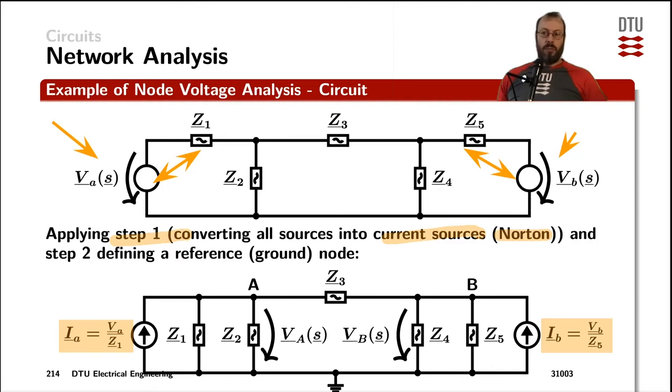So moving on to step two, we need to define a reference node that we typically call ground. And that is done by putting the symbol ground down here on one of the nodes. You could have chosen any arbitrary other nodes, but for human thinking, it is usually good to use one of the nodes that have the lowest potential in the circuit.